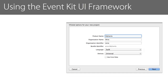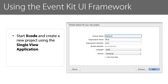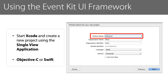To work with events in the EventKit UI framework, first start Xcode and create a new project using the Single View Application Template. Name the project as My Events. Note: you may choose Objective-C or Swift as the language.